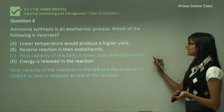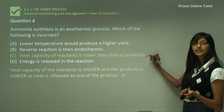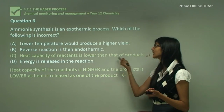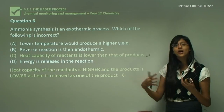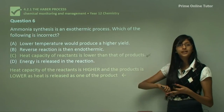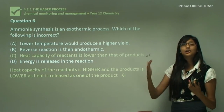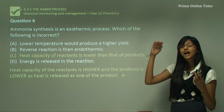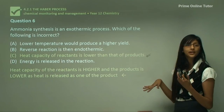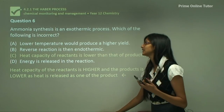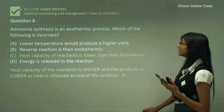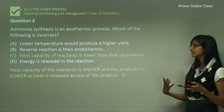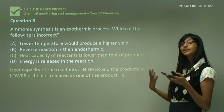So the incorrect statement is C: 'the heat capacity of reactants is lower than that of products.' This is wrong because in an exothermic process the energy of the reactants is higher than the energy of the products — energy is released, so it cannot be stored in the products. Therefore the answer is C, since the question asks which statement is incorrect.